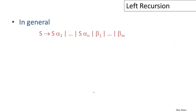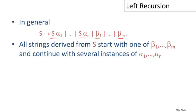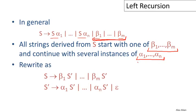In general, we may have many productions, some left recursive and some not. The language produced is all strings derived from S that start with one of the betas and continue with zero or more instances of the alphas. We can apply the same trick with many betas and many alphas. The general form rewrites this left recursive grammar using right recursion: each beta appears as an alternative in the first position, and a single additional symbol S prime generates any sequence of the alphas.